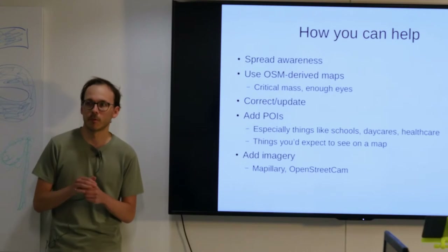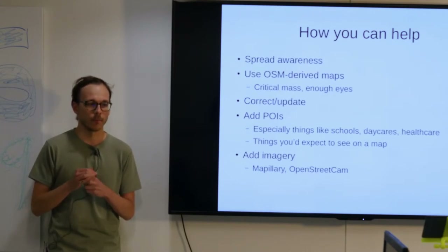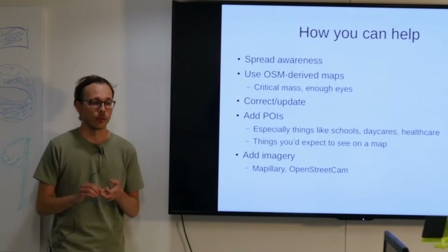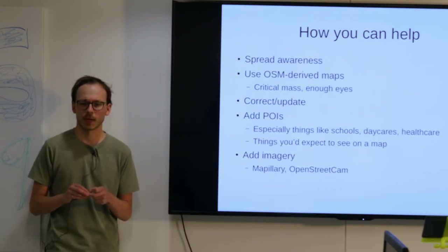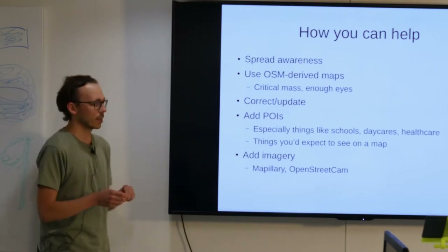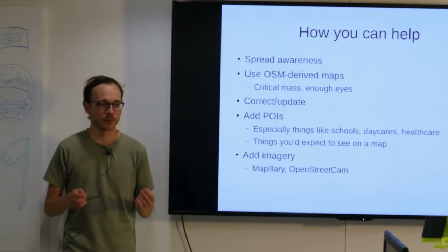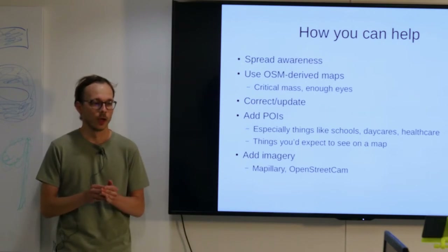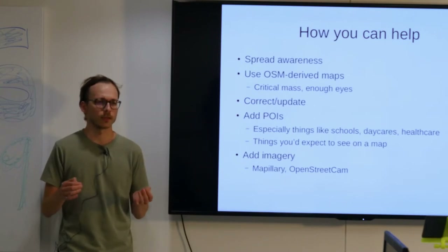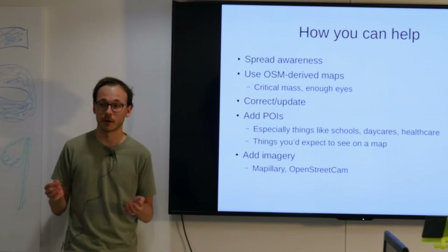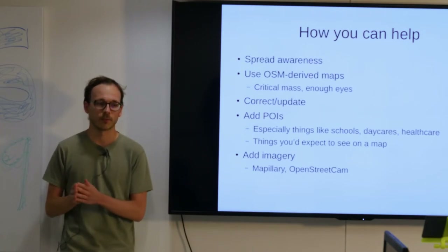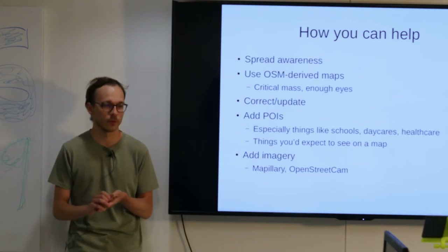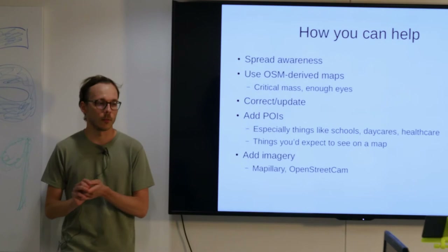One thing OpenStreetMap still has a problem with is diversity. It's got added stuff that people like me — white males, nerds probably — are interested in. So there's probably not as much focus on things like schools or daycares, which I know are especially low. Healthcare points in some neighborhoods are much better mapped than others. So things you would expect to see on the map that are likely missing — if you can add those and help make it more complete for everyone, that would be great.